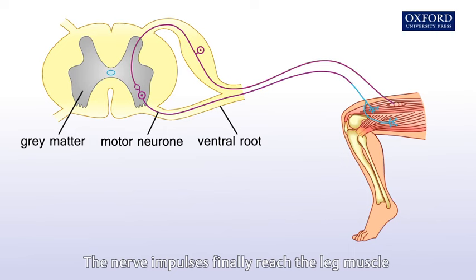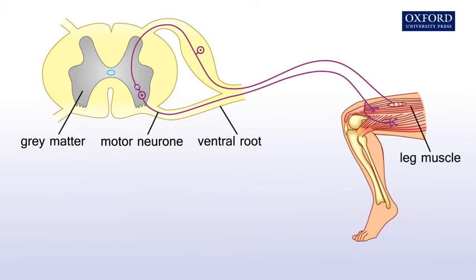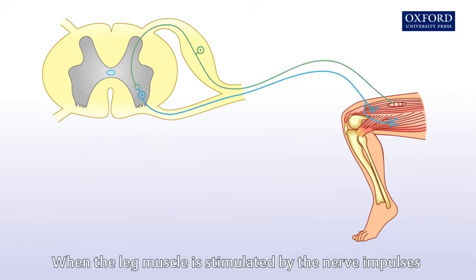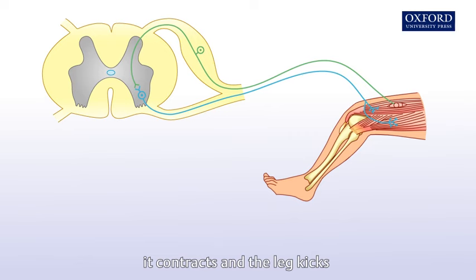The nerve impulses finally reach the leg muscle. When the leg muscle is stimulated by the nerve impulses, it contracts and the leg kicks.